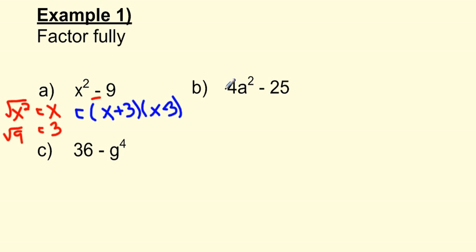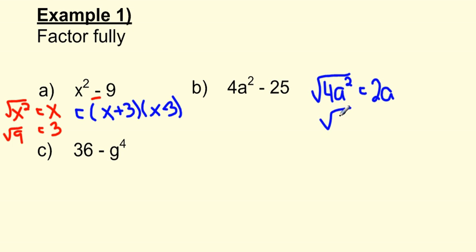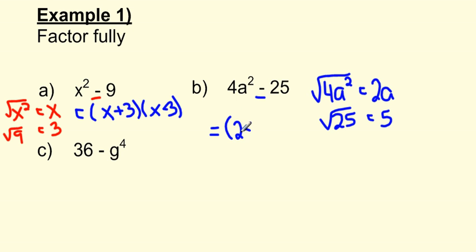Next: 4a squared minus 25. Can we take the square root of 4a squared? Well, 2 times 2 is 4 and a times a is a, so the square root of 4a squared is 2a. Can we take the square root of 25? That is 5. Is there a subtraction sign in between? Yes, there is. So we can use our pattern: 4a squared minus 25 equals 2a plus 5 times 2a minus 5.